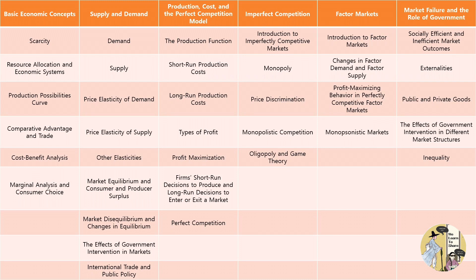In Unit 3, we are going to be studying about production, cost, profit, and a perfect competition model. In Unit 4, we are going to be studying about models in which the competition is not perfect, for example, monopoly.